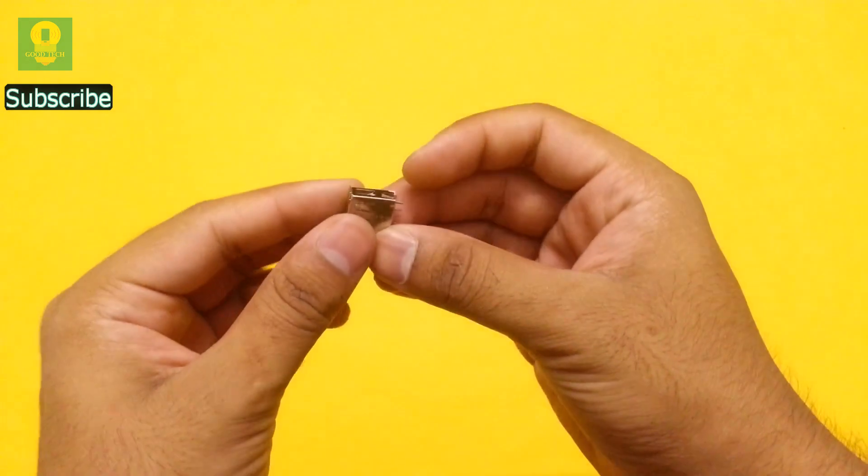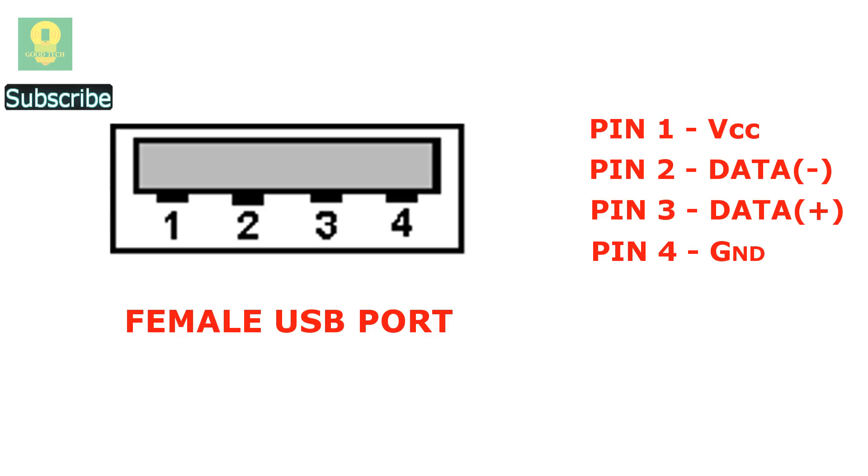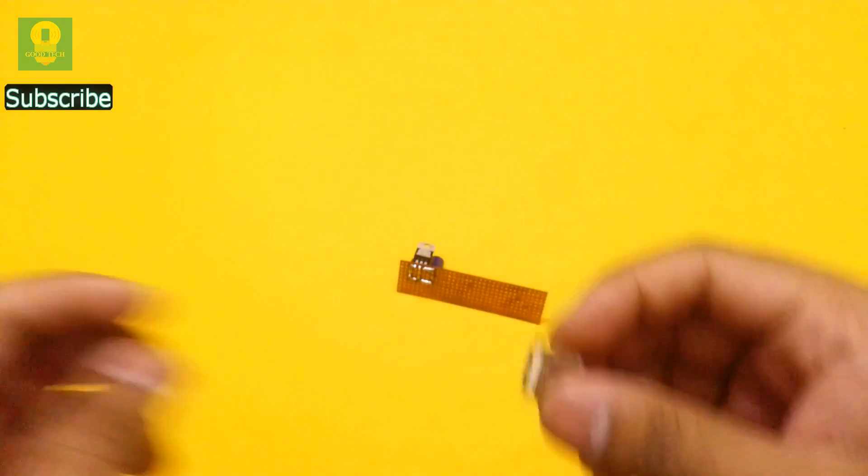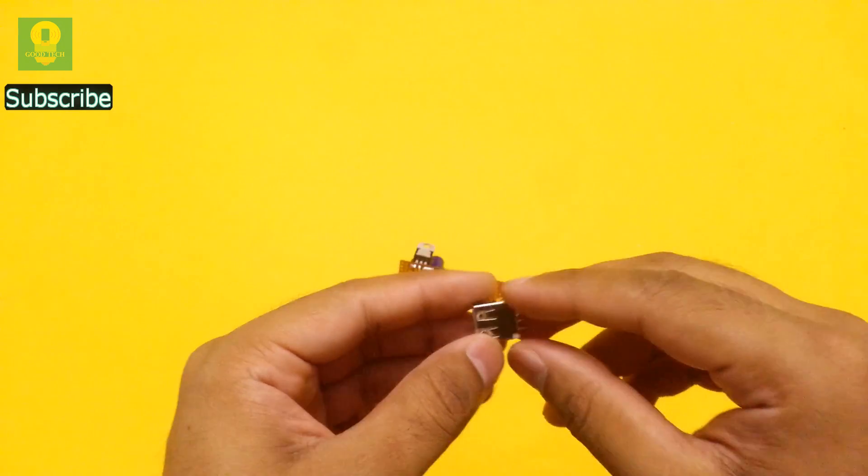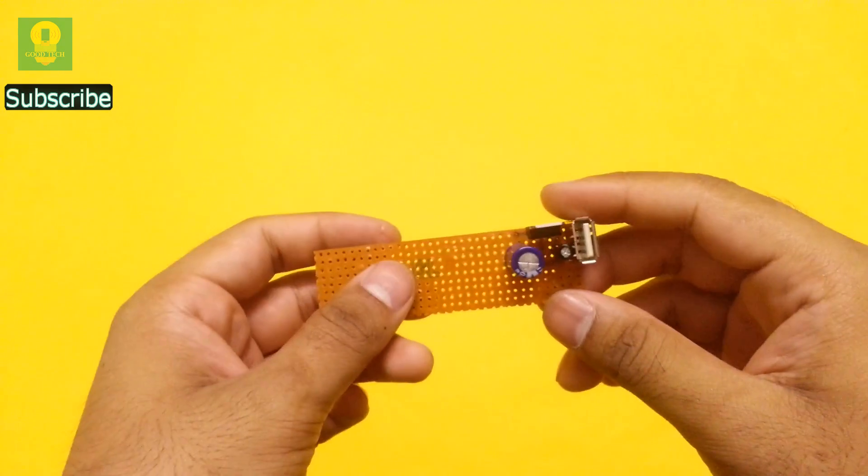Take a female USB port. Refer to the pin configuration of the USB port. We only need pin 1 and pin 4. Insert and solder the USB port to the PCB.